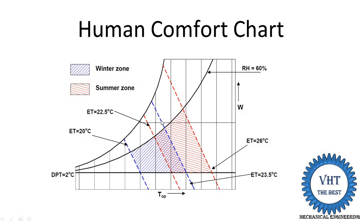So it is a range of 3.5 degrees centigrade effective temperature for feeling comfortable in winter. Similarly for summer, the range is also 3.5 degrees centigrade, because 26 minus 22.5 equals 3.5 degrees centigrade. This blue zone indicates the comfortable zone for winter seasons.